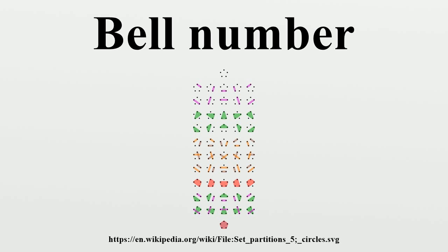The Bell numbers come up in a card-shuffling problem. If a deck of N cards is shuffled by repeatedly removing the top card and reinserting it anywhere in the deck, with exactly N repetitions of this operation, then there are N^N different shuffles that can be performed. Of these, the number that return the deck to its original sorted order is exactly BN. Thus, the probability that the deck is in its original order after shuffling is BN over N^N, which is significantly larger than the 1/N! probability that would describe a uniformly random permutation.